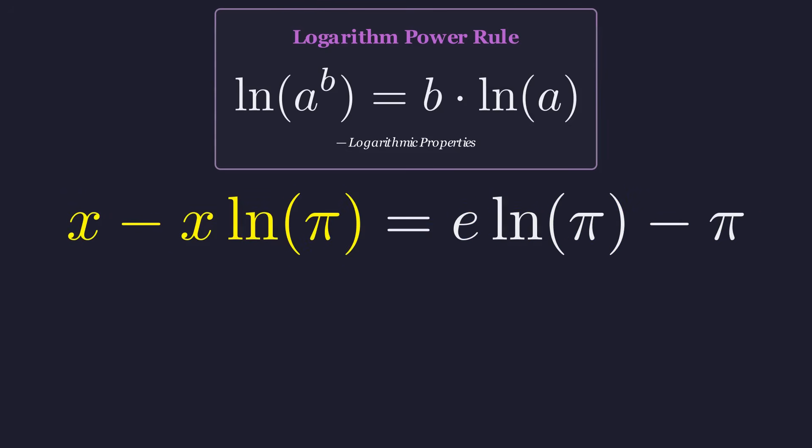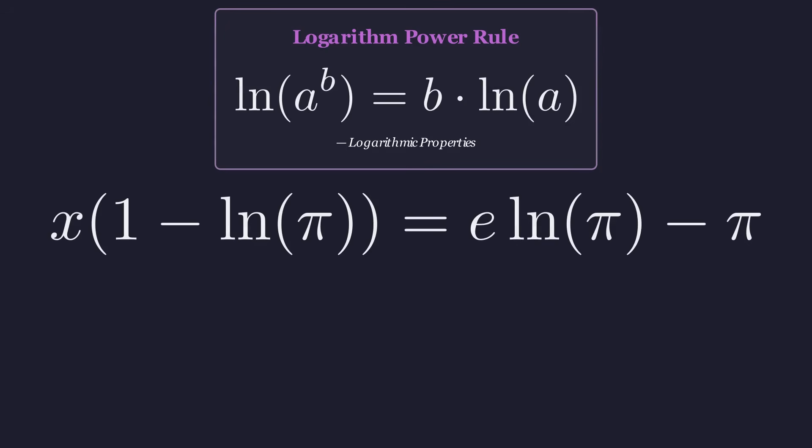On the left side, notice that x is a common factor. Factoring out x leaves us with x times the quantity 1 minus the natural logarithm of pi.